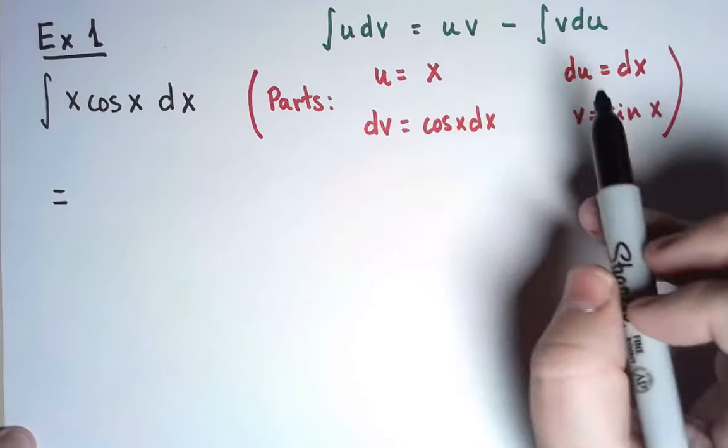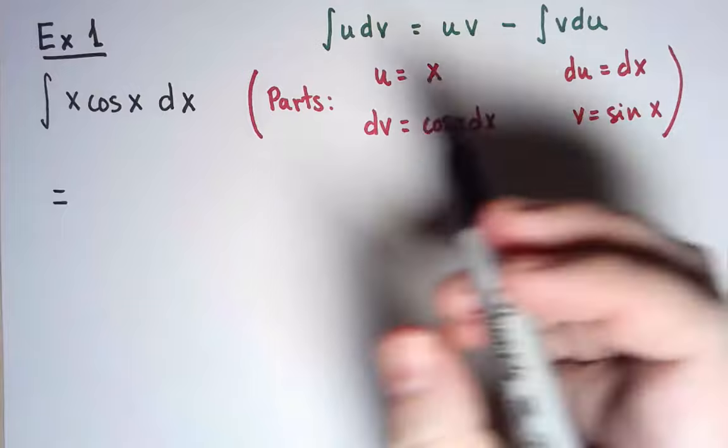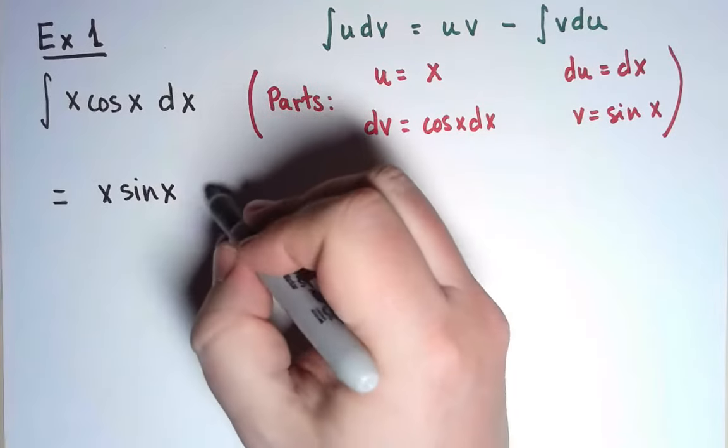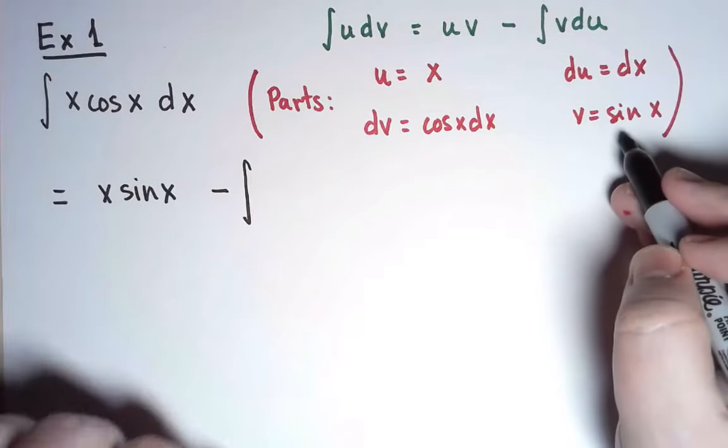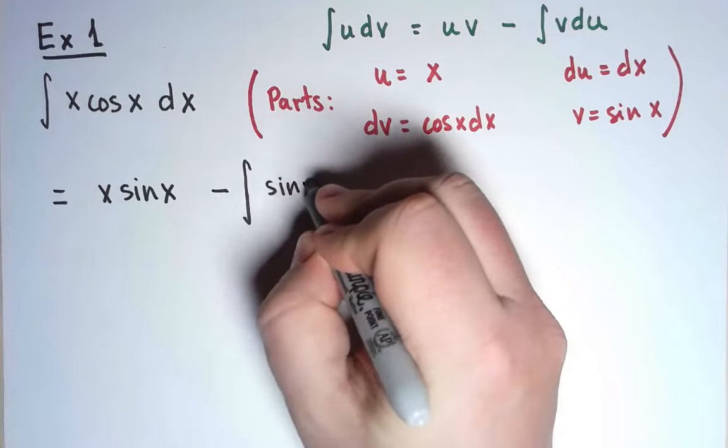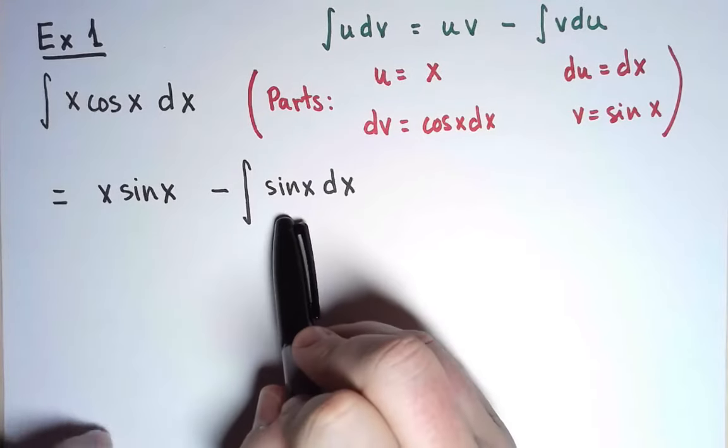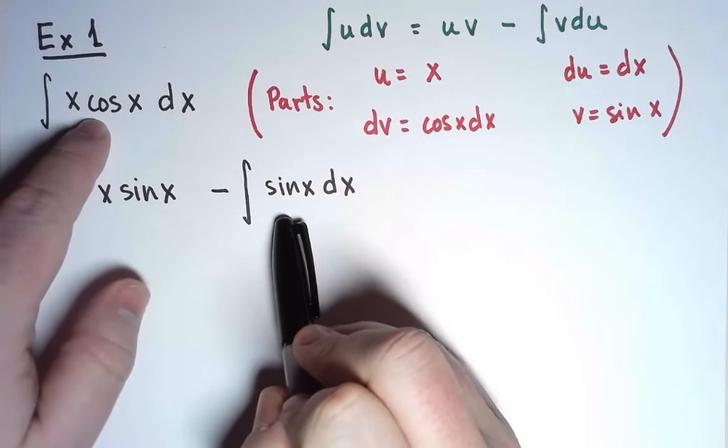I get u times v, which is x sin x, minus the integral of v du, which is sin x dx. Success! The transformed integral is indeed easier than the original integral.